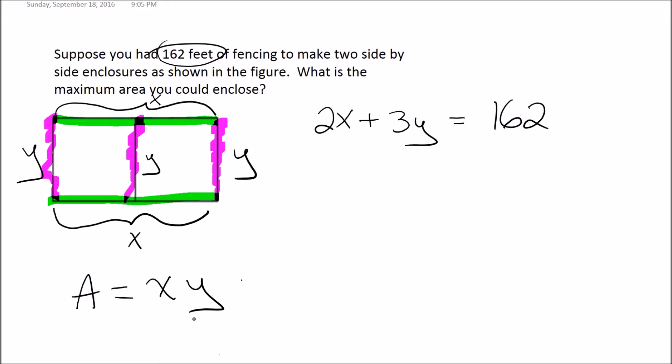So let's go ahead and solve for one of them. I'll solve for X in this case. So we'll minus off 3Y from both sides, so we have 2X equals 162 minus 3Y. And lastly, divide everything by 2.